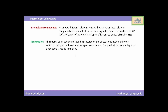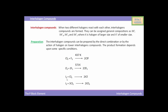When chlorine reacts with fluorine at 437 Kelvin, the reaction yields ClF, that is chlorine monofluoride. In another reaction, when chlorine reacts with fluorine at 573 Kelvin, the reaction yields ClF₃, that is chlorine trifluoride. Both are interhalogen compounds.